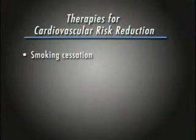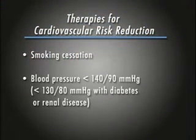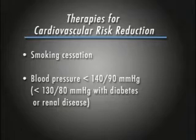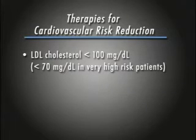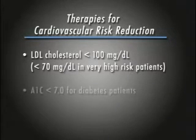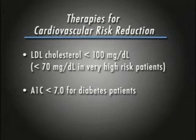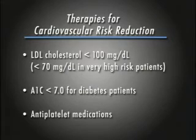An effective treatment program for all individuals with PAD includes immediate smoking cessation; lowering of hypertension to less than 140/90, or less than 130/80 if diabetes or renal disease is present; treatment of dyslipidemia with an LDL cholesterol target less than 100 for all PAD patients, or less than 70 for very high-risk patients; management of diabetes with a target hemoglobin A1c less than 7; and use of antiplatelet medications to reduce cardiovascular risk. For patients with claudication, treatment may also include a supervised exercise program, medications to decrease symptoms, and endovascular or surgical techniques in selected individuals.